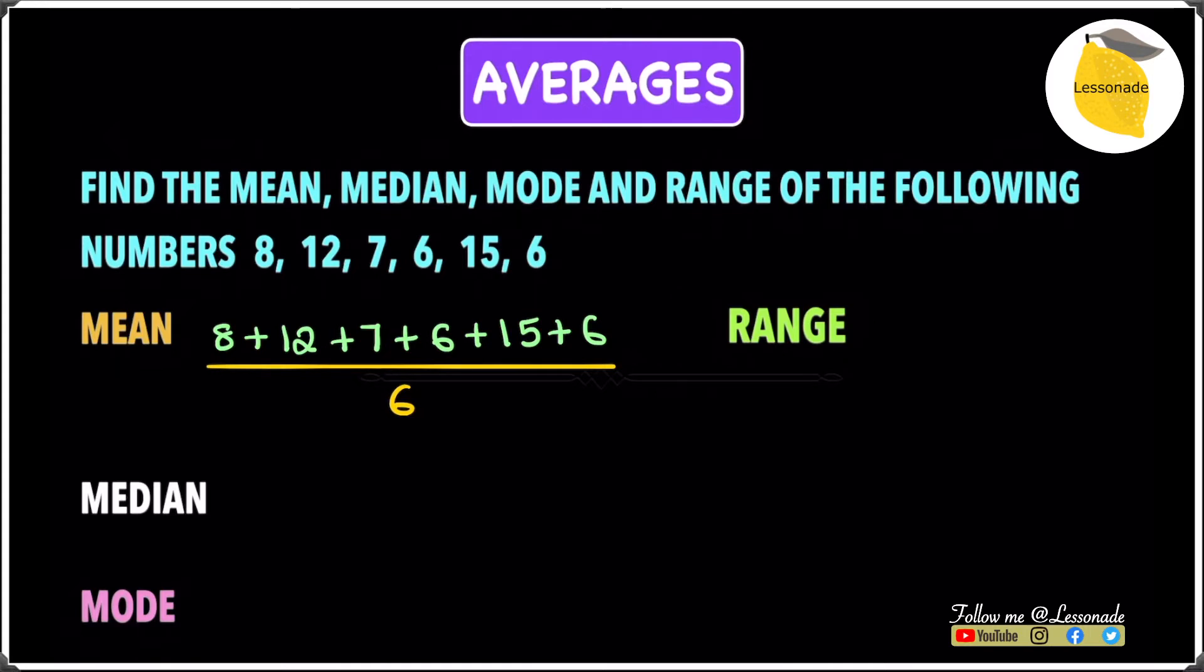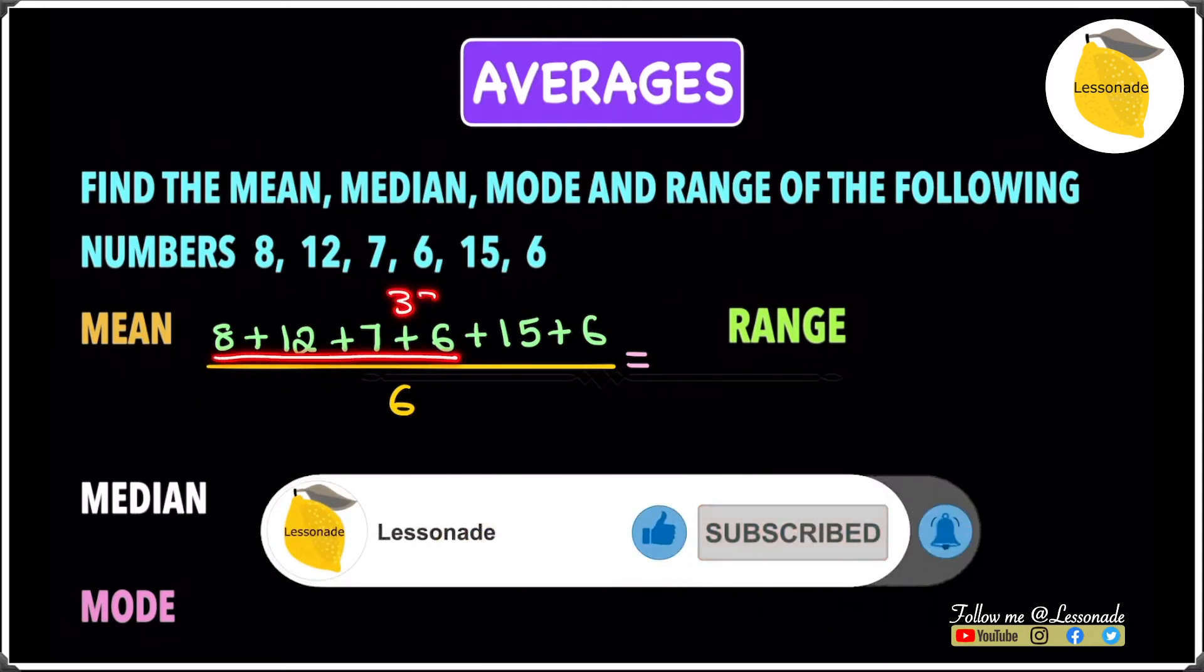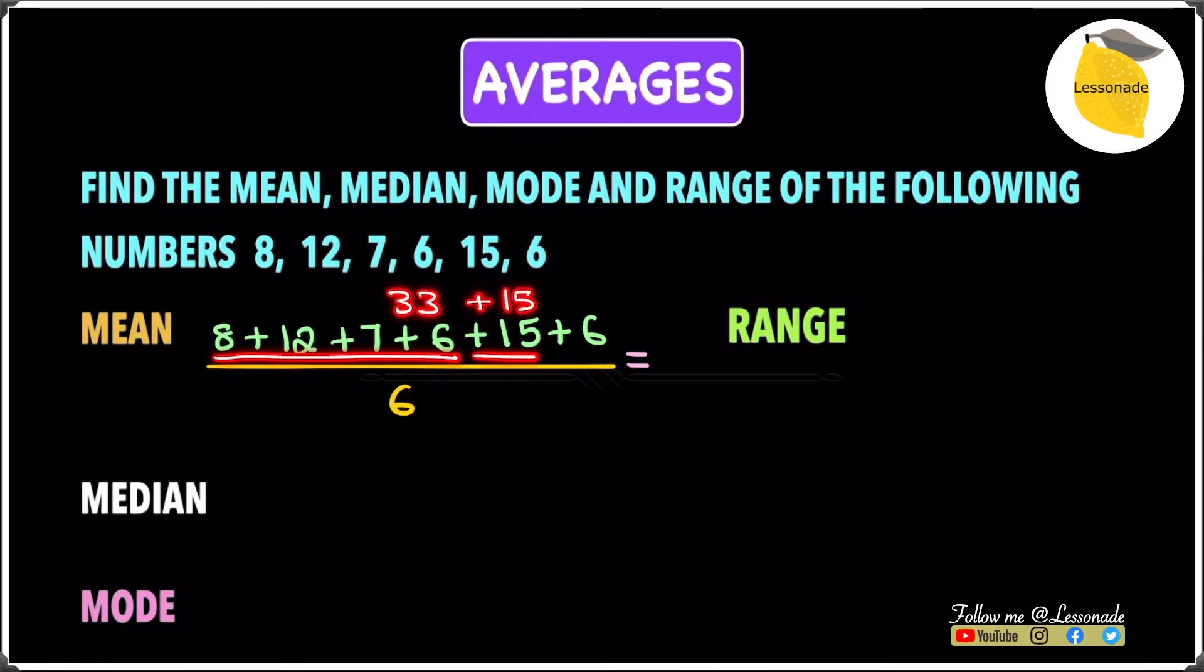The next thing we do is add the top numbers. So we have 8 plus 12, which gives us 20, plus 7, which will give us 27. And then 27 plus this 6 is going to give you 33. And then 33 plus 15 will give you 48. So we get 54 when adding all of this up. And you have to divide these by 6. So 54 divided by 6 gives us an answer of 9.